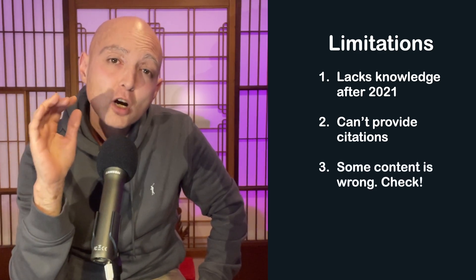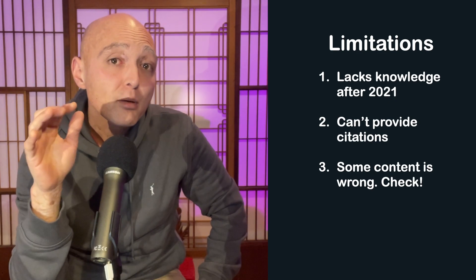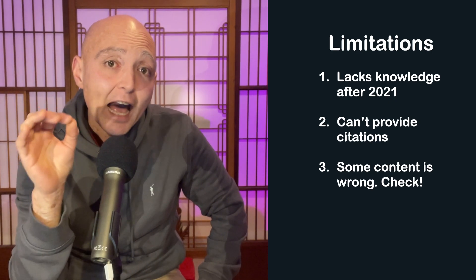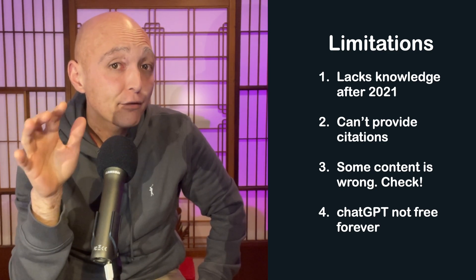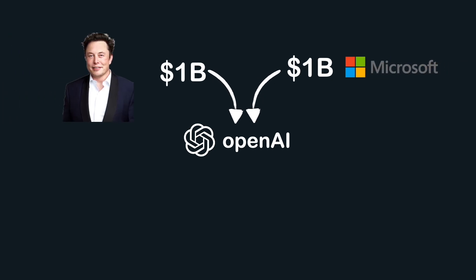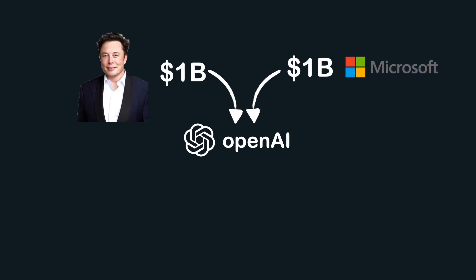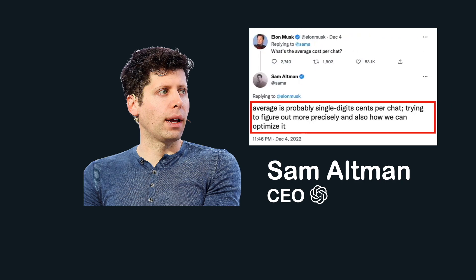Third, some of ChatGPT's content is wrong, so don't trust it blindly. For important work, double-check the accuracy of the text. Fourth, ChatGPT will probably not be free forever. OpenAI has received $1 billion in funding from Microsoft and Elon Musk respectively, transitioned to a for-profit company in 2019, and CEO Sam Altman noted on Twitter that each chat costs a few cents — so users may have to pay for it at some point.